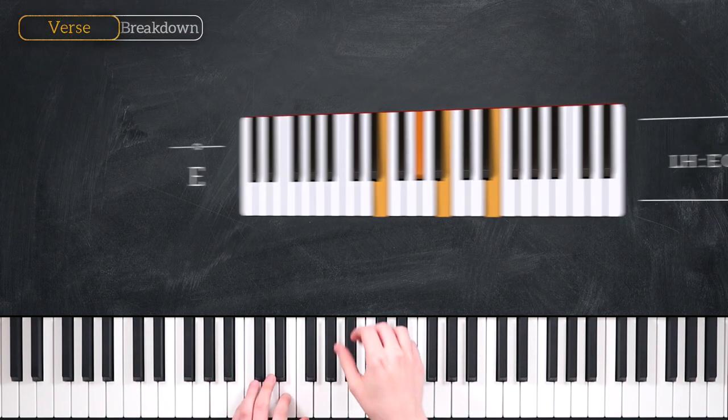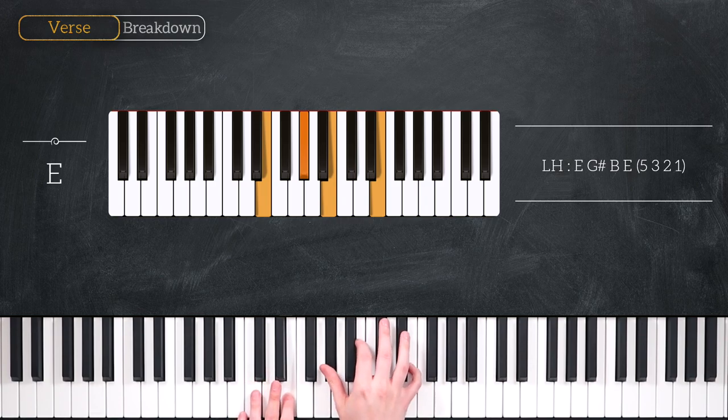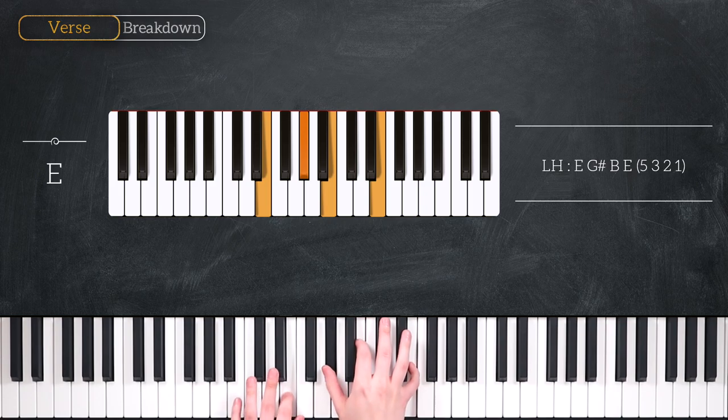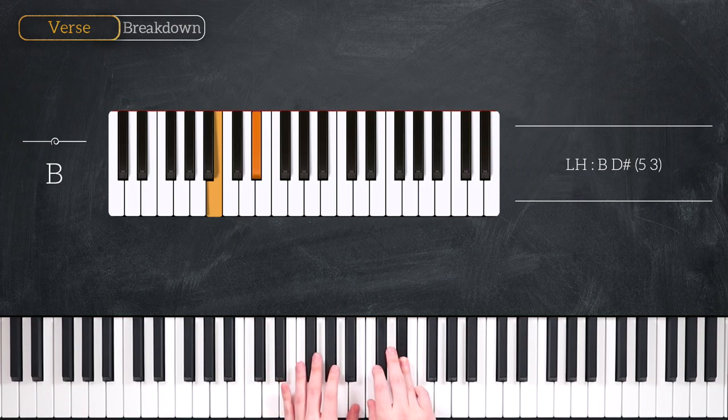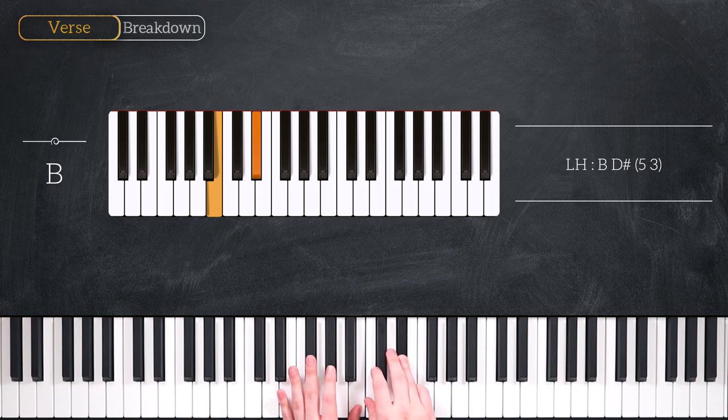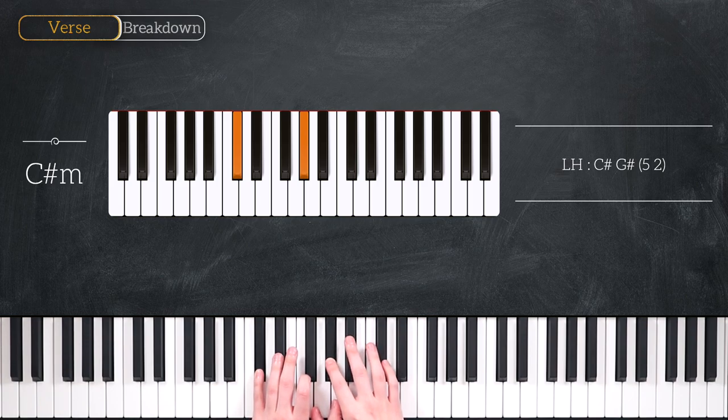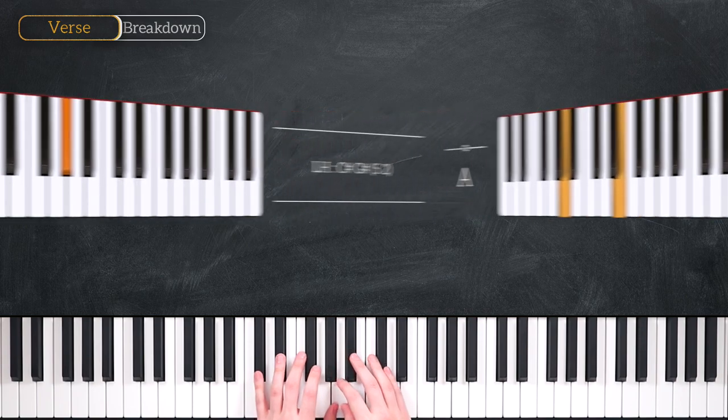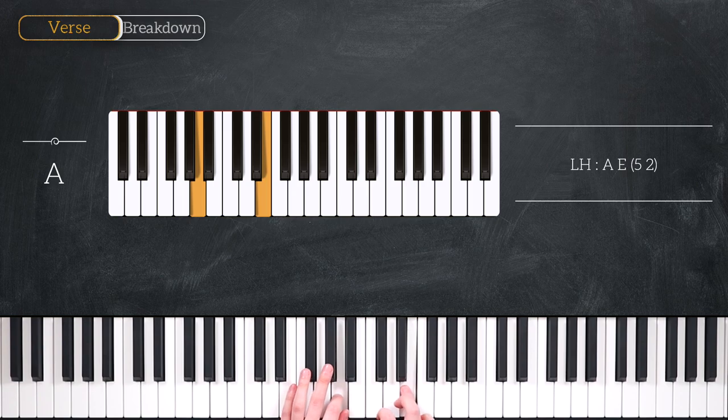Our first chord is going to be an E major chord. That's an E in the left hand, G sharp, B and E in the right hand. Our next chord is going to be a B chord. That's a B and a D sharp. Our third chord is going to be a C sharp minor chord. That's a C sharp in the left hand and a G sharp in the right hand. And lastly, we've got an A major chord. That's an A in the left hand and an E in the right hand.